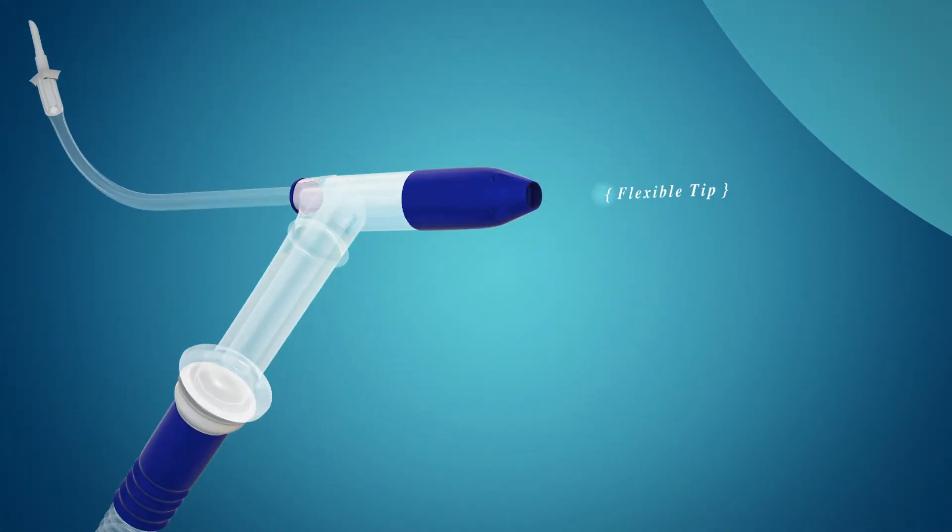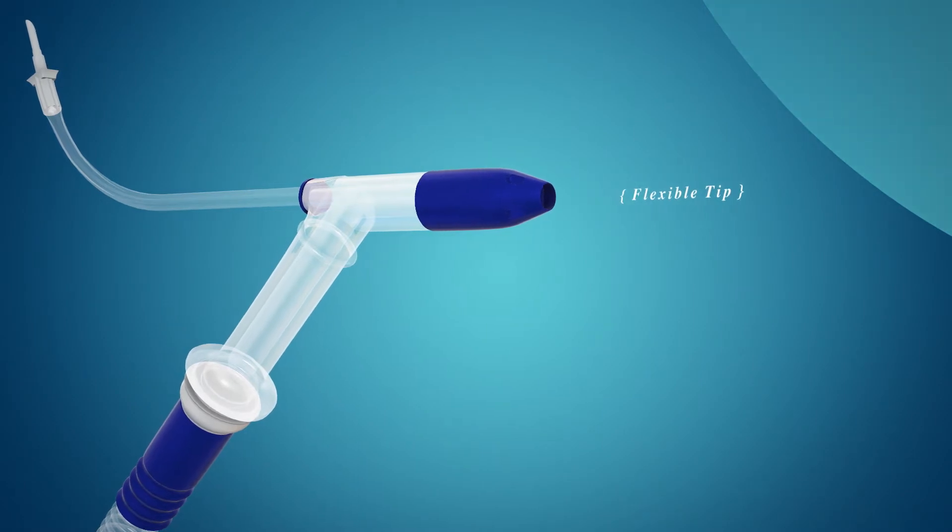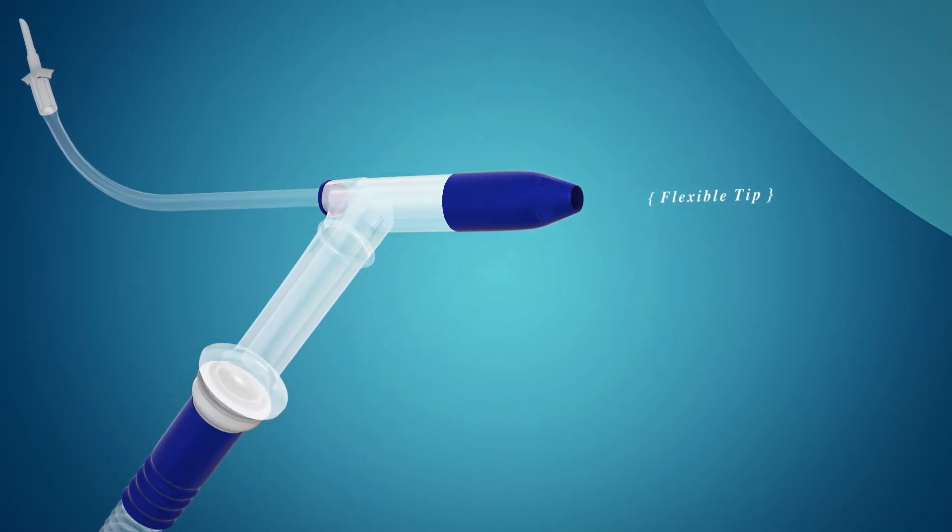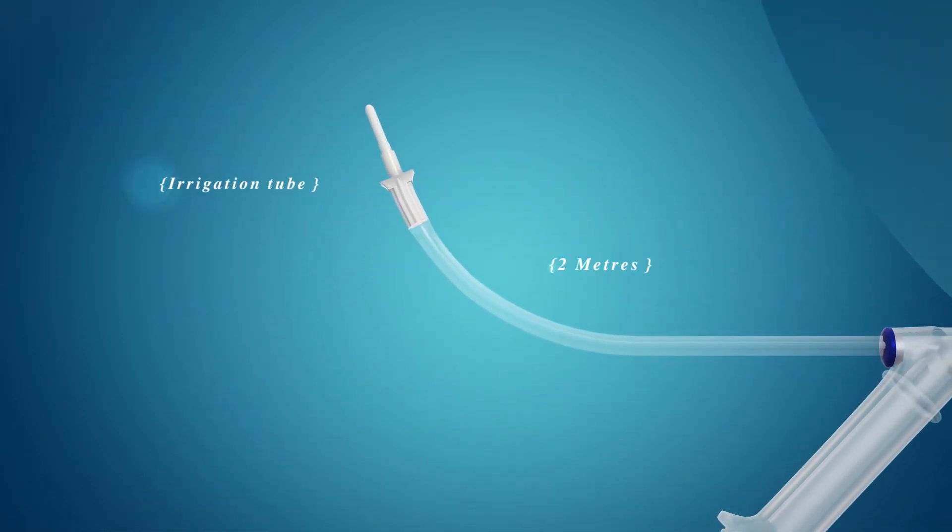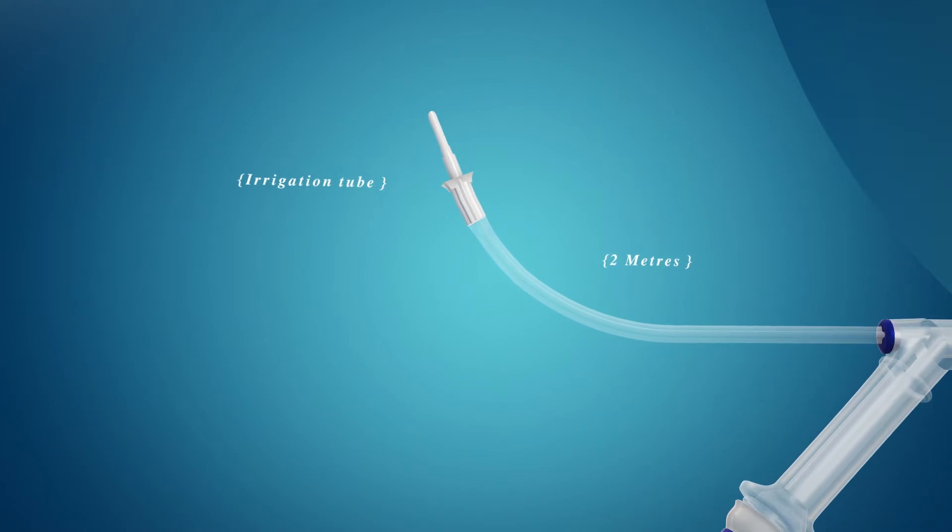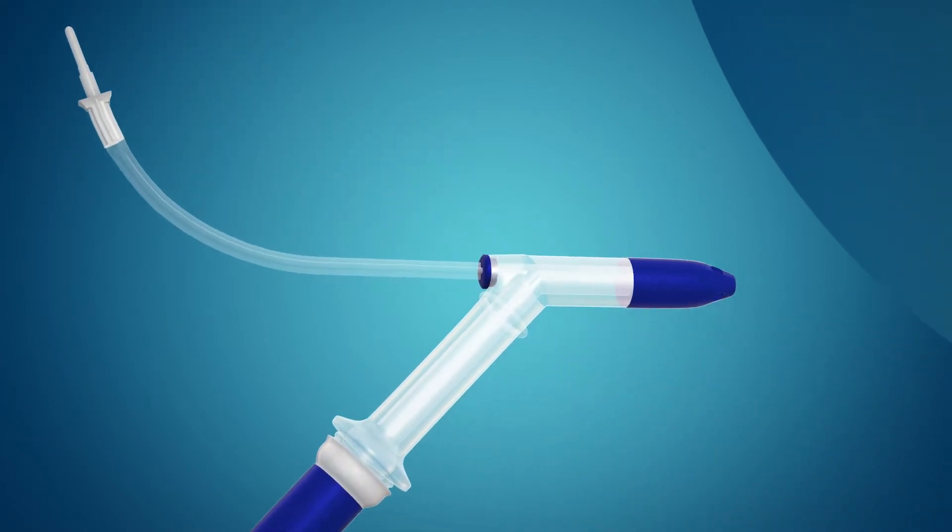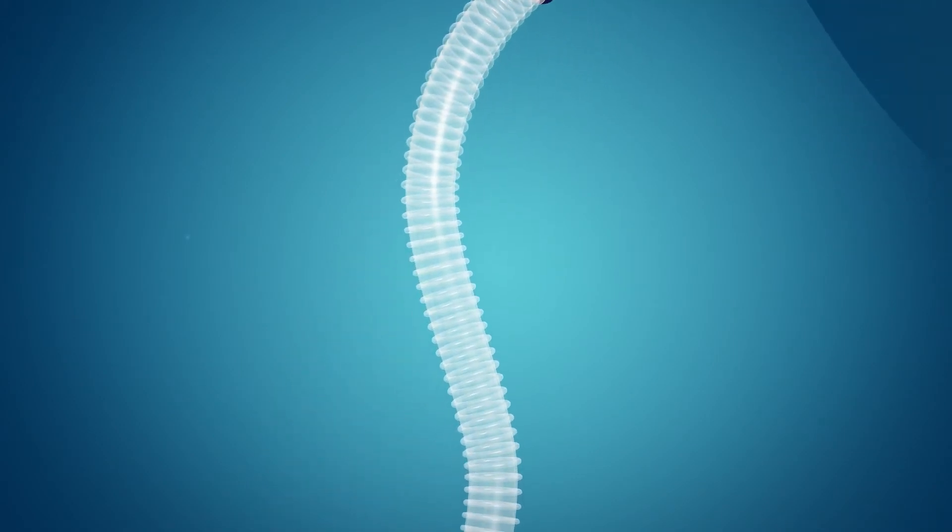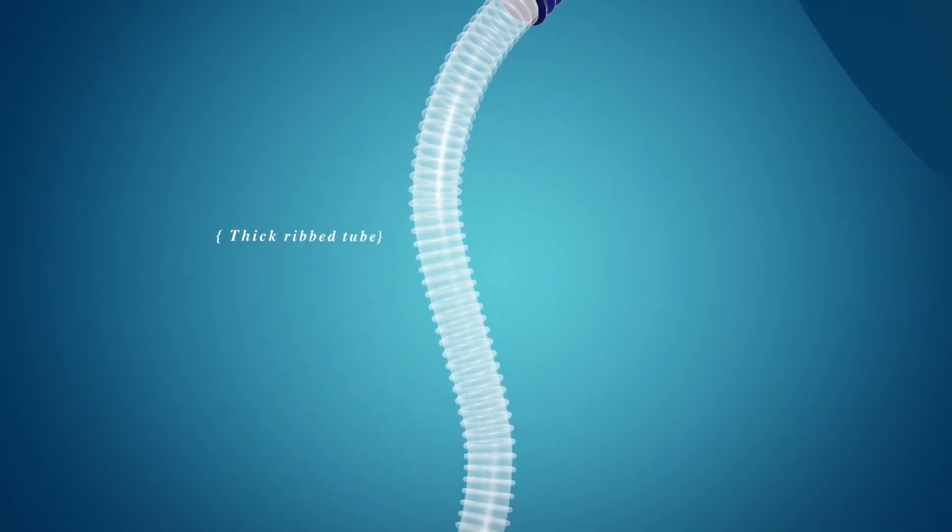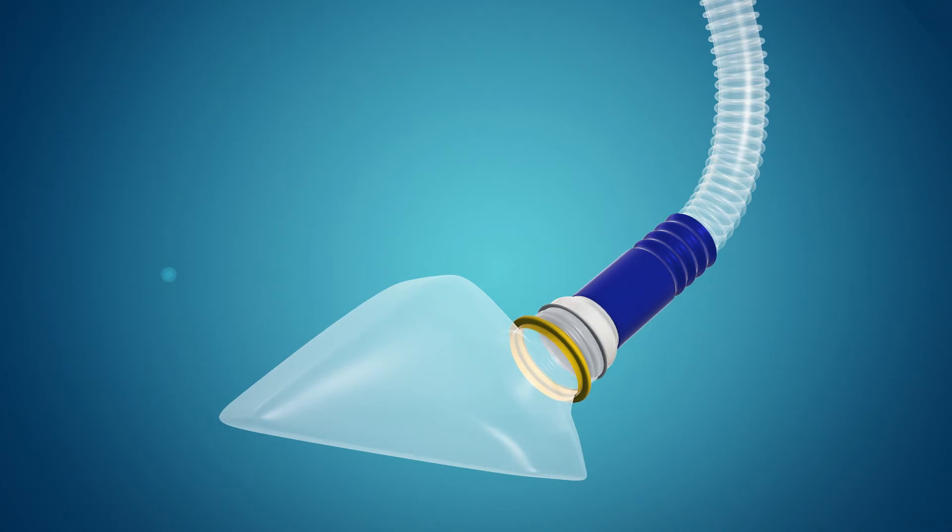By using a flexible tip for atraumatic insertion without an obturator, it is possible to provide a completely closed irrigation system. A high-flow irrigation set, connected directly to a fluid bag, can be passed through the device and positioned at any point in the rectal stump. A wide-bore drainage tube that never blocks leads to a detachable and sealable waste container.